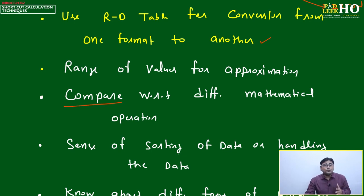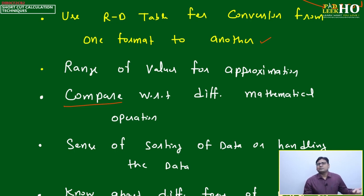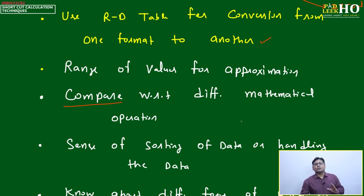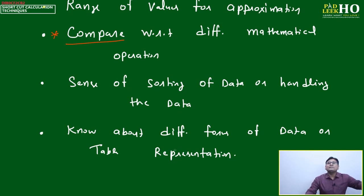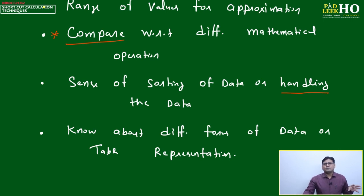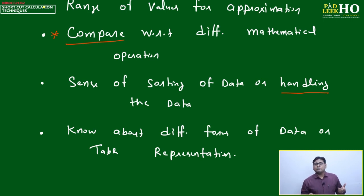Another important point is the sense of sorting and handling data — understanding how data can be grouped into one type and differentiated from another. I'm not teaching you data science or how to become a data analyst or data scientist. But data is an important factor — data is the new fuel. Everything is centering around data, and the role of data interpretation keeps increasing in managerial roles and MBA courses.